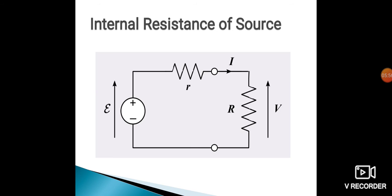Each and every source has its own internal resistance, which we have to consider while calculating values, and that internal resistance is represented by small r. From the circuit diagram you can see a voltage source applied from the left side — small r is the internal resistance of that EMF source, and capital R is the resistance of the load through which current is flowing. In this way, internal resistance is connected in series with the EMF.